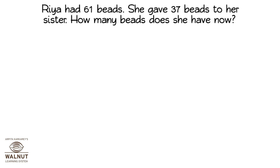Riya had 61 beads. She gave 37 beads to her sister. How many beads does she have now? What do we have to do here? We have to find out how many beads she has left. From 61 beads, she has given away 37 beads. We have to do 61 minus 37.